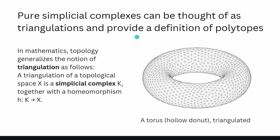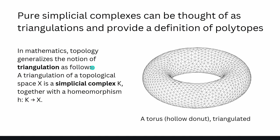Pure simplicial complexes can provide a triangulation and define polytopes. A torus — think of it as a hollow doughnut — in mathematics, topology generalizes the notion of triangulation. A triangulation of a space X is a simplicial complex together with a homeomorphism. Here we have a triangulation of the torus space with many little triangular elements.